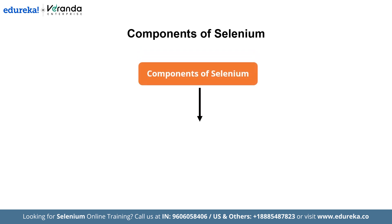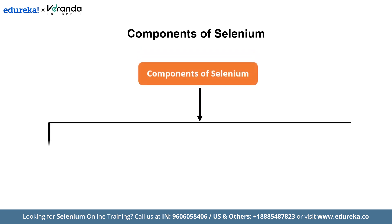Now let us have a look at the components of Selenium. Selenium is a powerful automation framework consisting of four key components. First is Selenium WebDriver, which directly interacts with web browsers to automate user actions like clicking, typing and navigating pages. It supports multiple programming languages like Python, Java, C# and more, and browsers such as Chrome, Firefox and Edge.